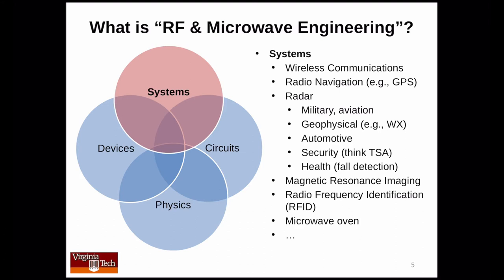Another way to think about RF and microwave engineering is in terms of the Venn diagram I'm showing here. I think broadly in terms of this area being four sub-areas: systems, devices, circuits, and physics. It's a Venn diagram, so these four things overlap each other — certainly there are problems which involve combinations of circuits and systems, combinations of circuits and physics, combinations of devices and physics, and so on.